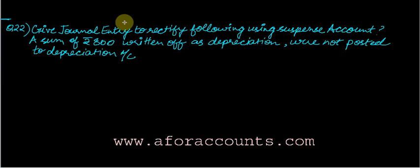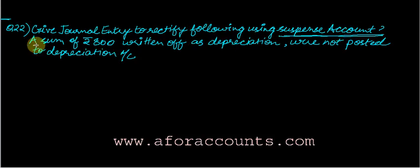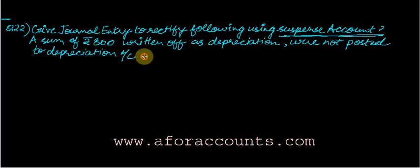Now the 22nd entry: give journal entry to rectify the following using a suspense account. A sum of Rs. 800 written off as depreciation — depreciation is an indirect expense — was not posted to the depreciation account. This is purely an error of omission; it was not posted at all. When it is not at all posted, our work becomes even easier — just post it now.